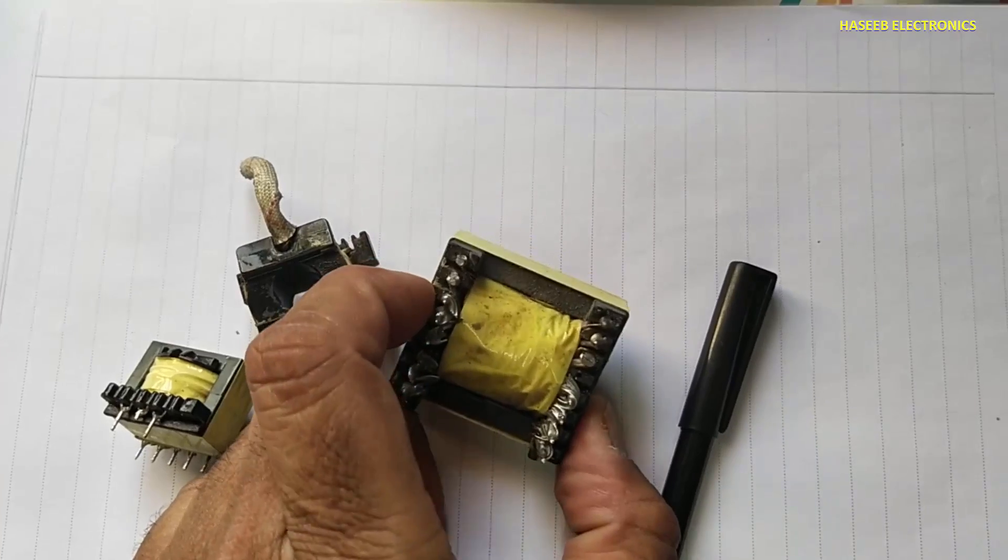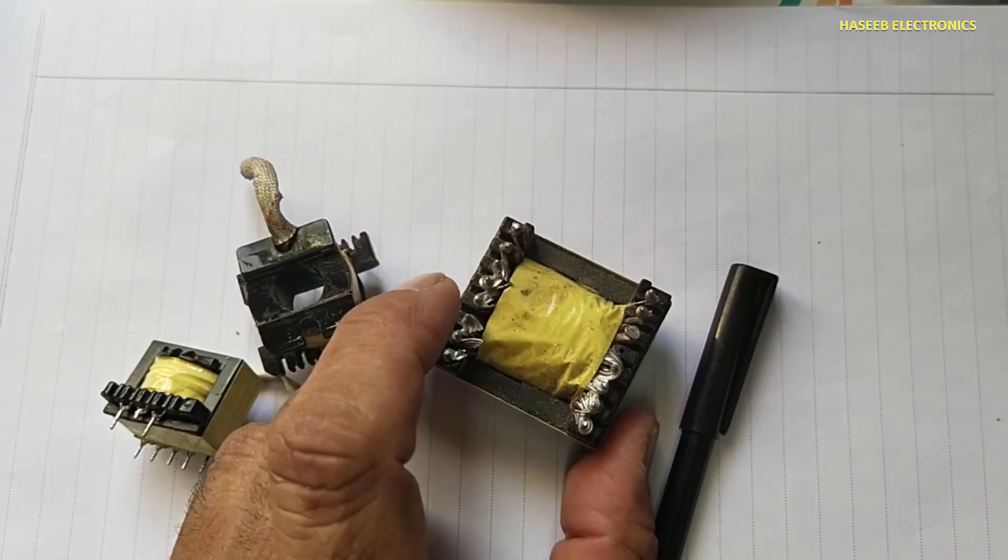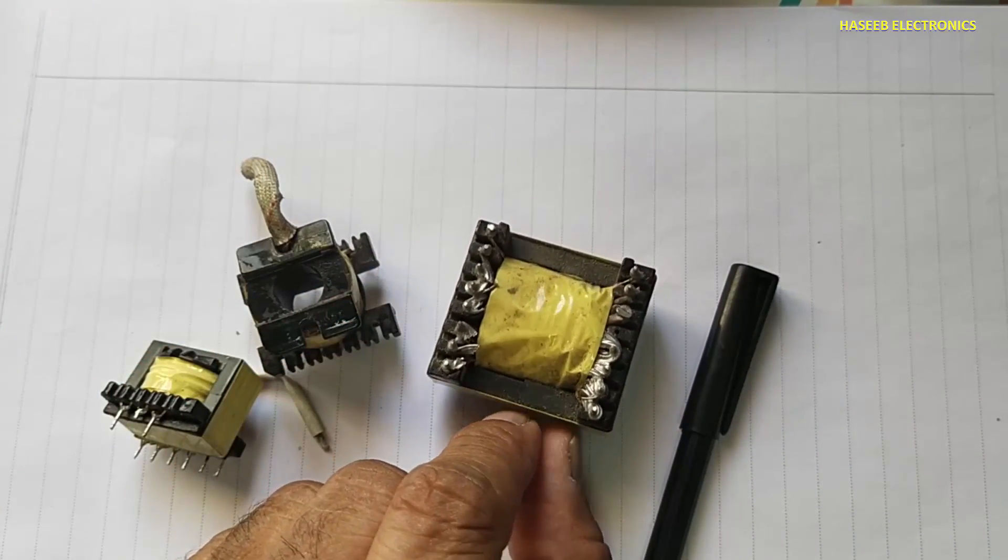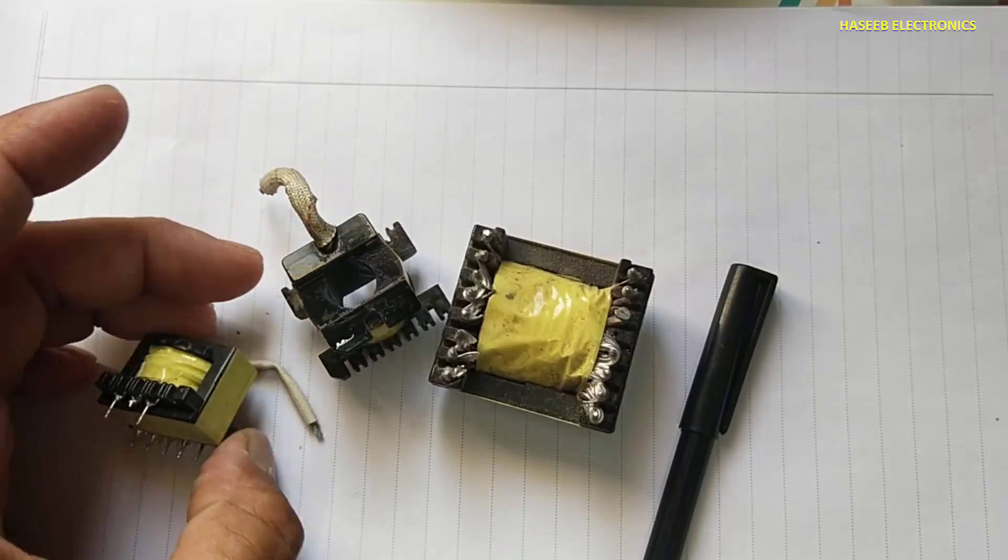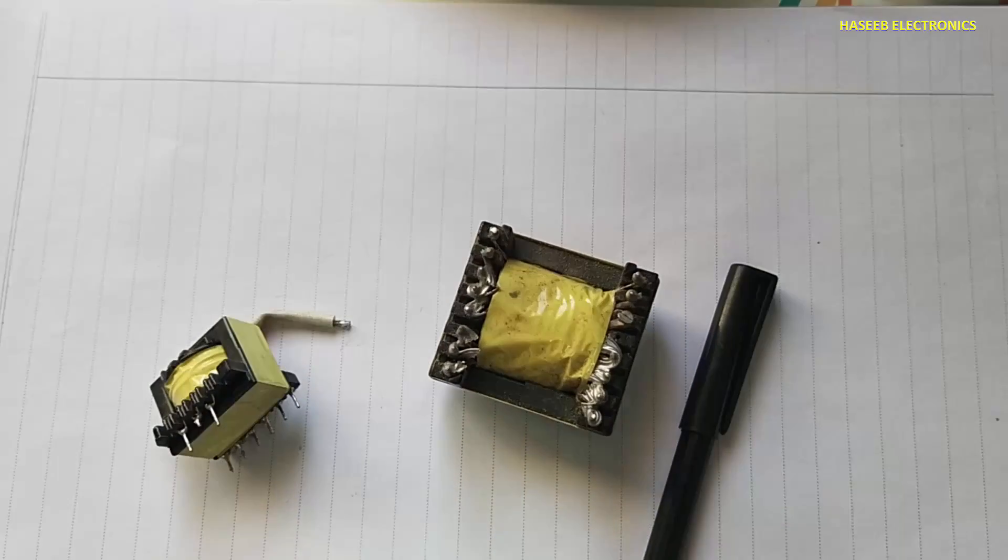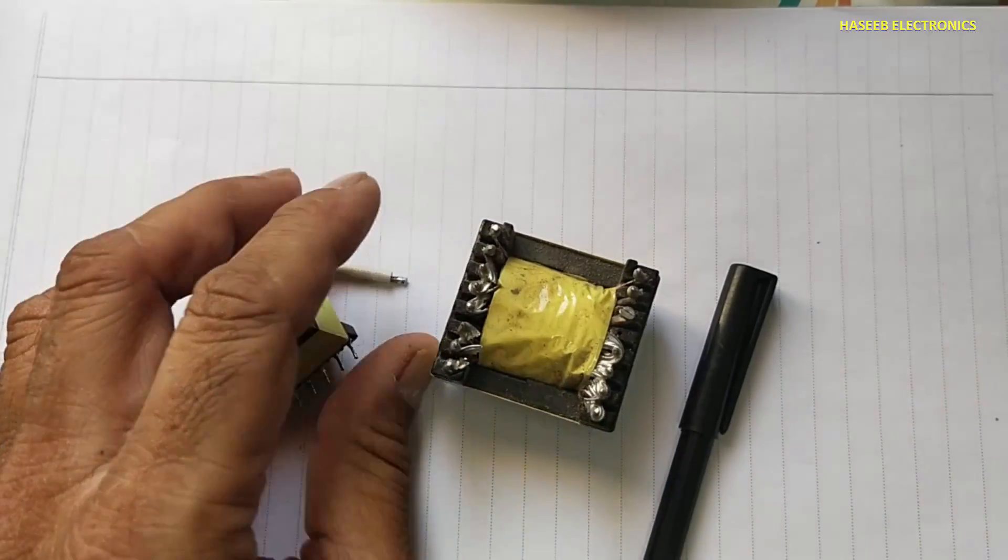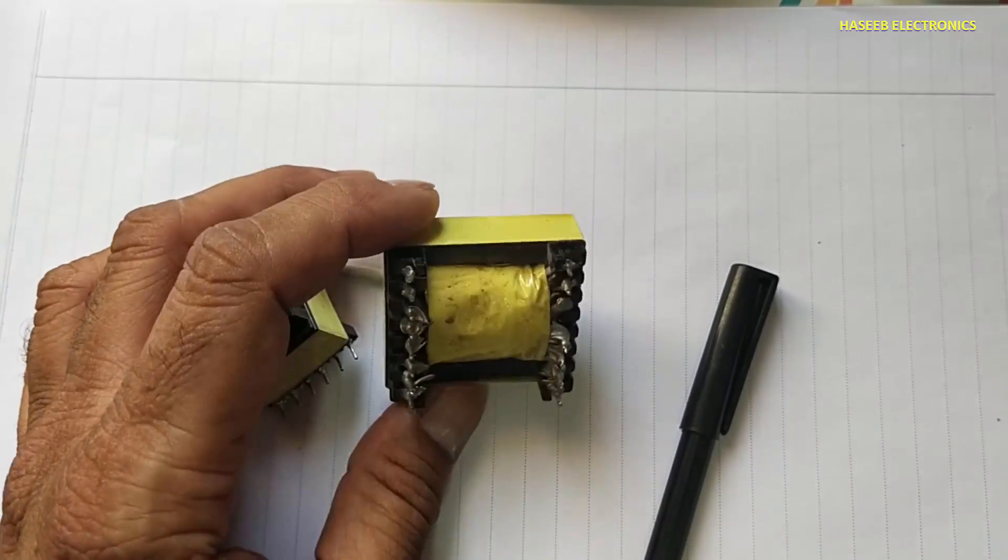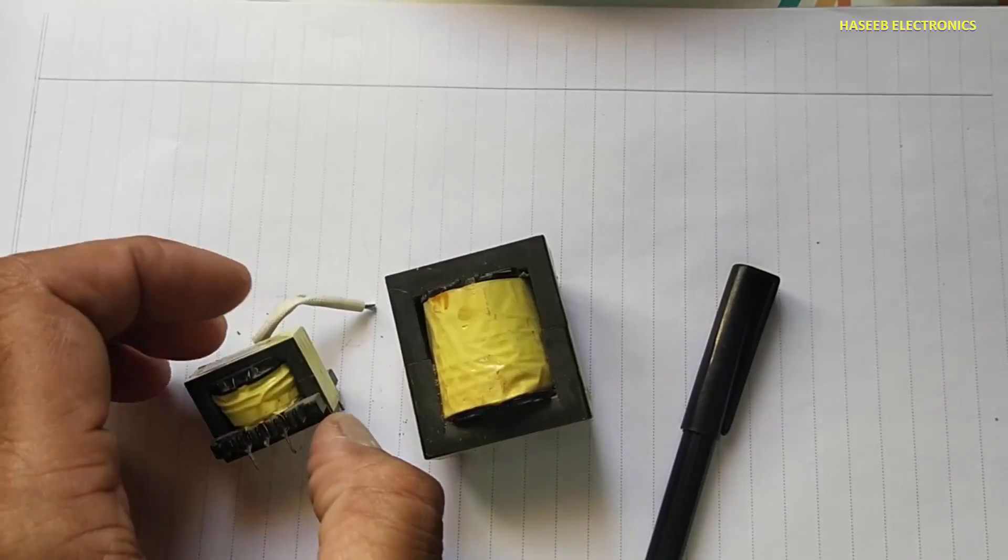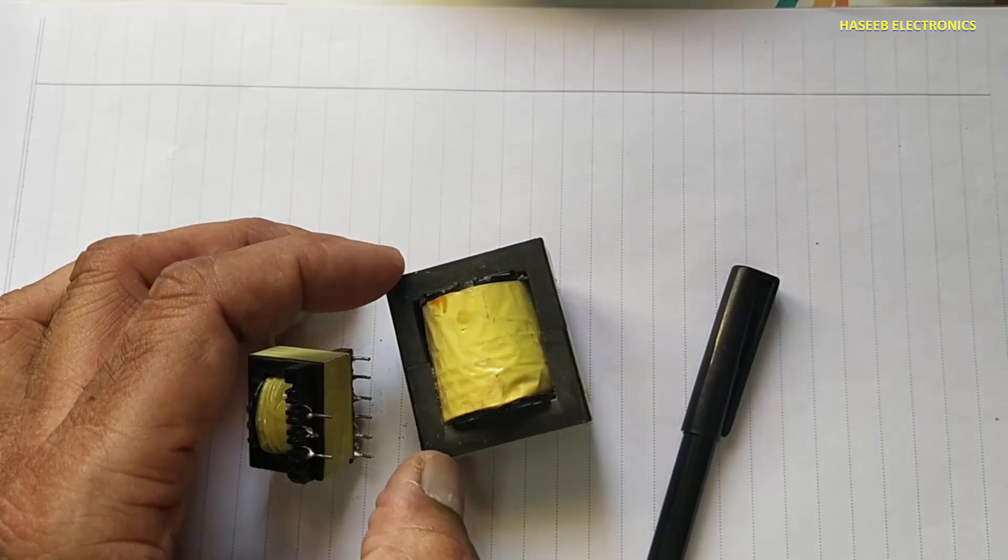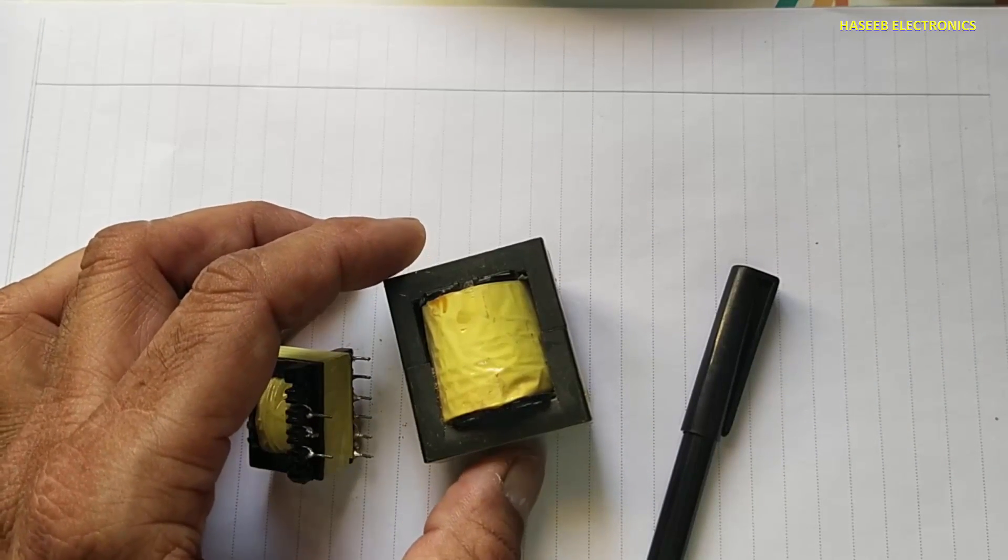When we discuss ferrite core, it is not just only ferrite core. It can be made from many materials. Each material has its own specifications and its own application. Powder core, soft core, it has a special categorization that is called permeability.